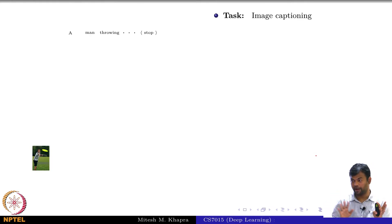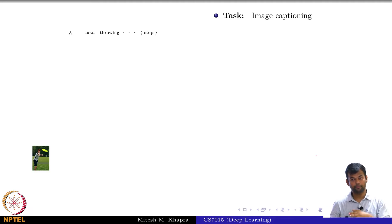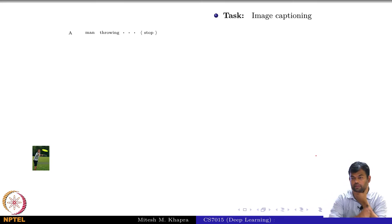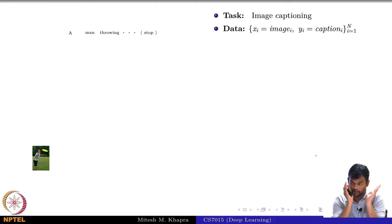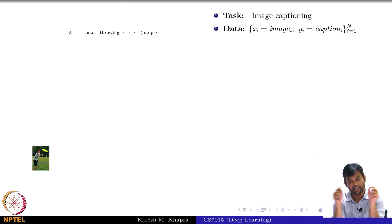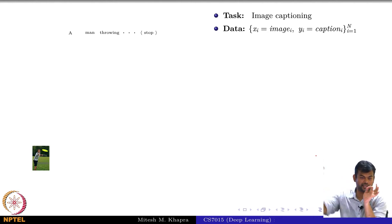Let us go back to the task of image captioning. What is the input? What is the training data given to you? X is the image, Y is the description. We are given N such training pairs, where X_i is the image and Y_i is the description. Y_i is itself a sequence — Y_i_1 to Y_i_T.